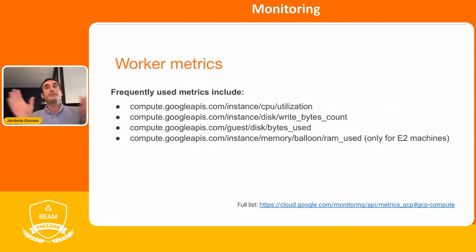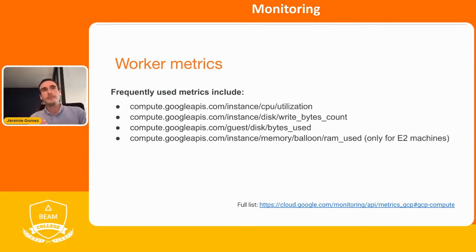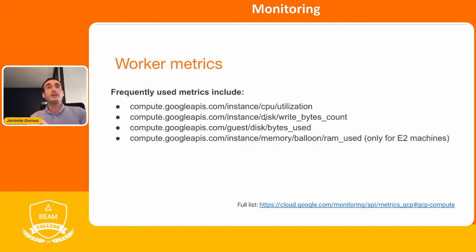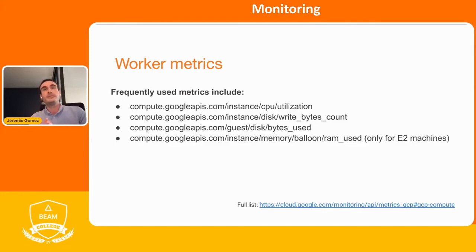Then you have worker metrics — you want to know how your different machines are behaving. You'll see they start with compute.googleapis.com and they're all about the machines running your job. For example, you can see CPU utilization, information about your disk IO — whether you're writing a lot to disk — and information about RAM memory usage, but only for the E2 family of machines.